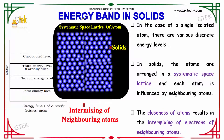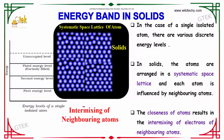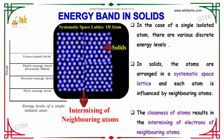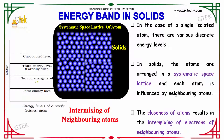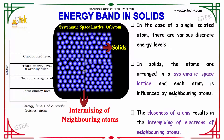Now we will look into the energy band in solids. You are able to see the solid atoms and it is an intermixed one. This is how the space lattice of an atom is. In the case of a single isolated atom, there are various discrete energy levels. In solids, the atoms are arranged in a systematic space lattice and each atom is influenced by neighboring atoms. The closeness of atoms results in the intermixing of electrons of neighboring atoms.